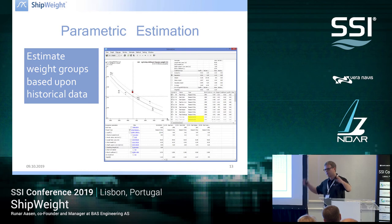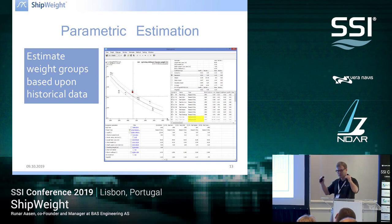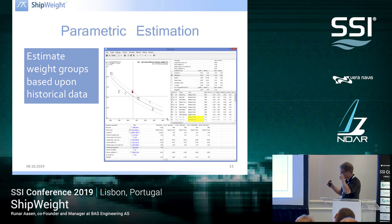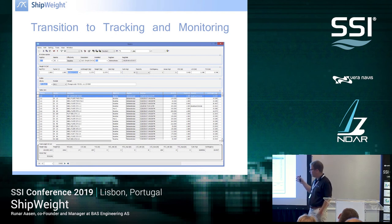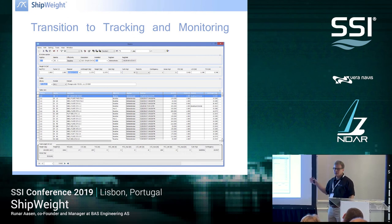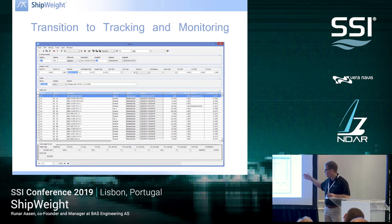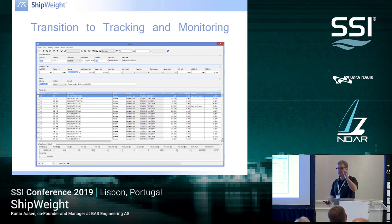We recommend a top-down approach: start at the top, first estimate the whole lightship, then divide into subgroups. We also have a system for keeping the top results and comparing them towards your more granular estimations. At some point you transition to tracking and monitoring and start to gather single weight items with more accurate data. You assign these items to a weight group, but you hang on to your parametric estimation value until you see that the list of items is more mature than your parametric estimation.